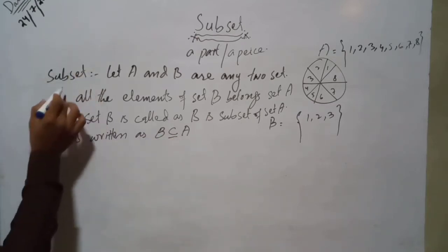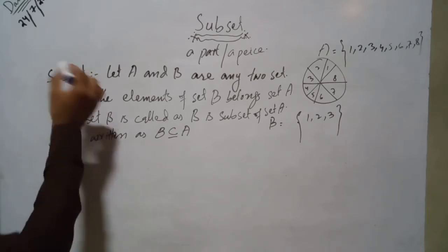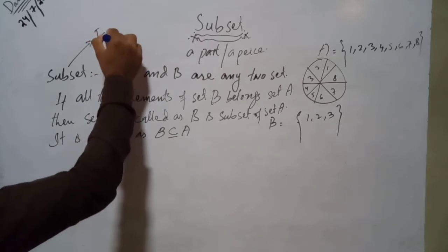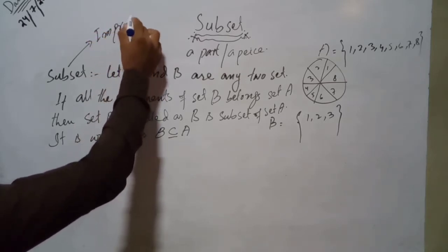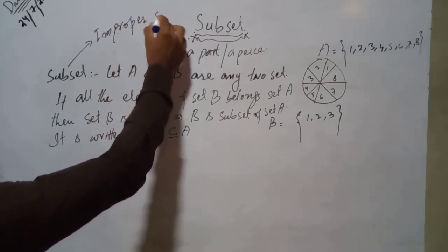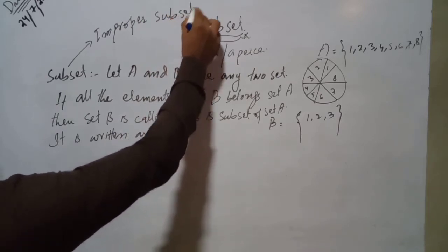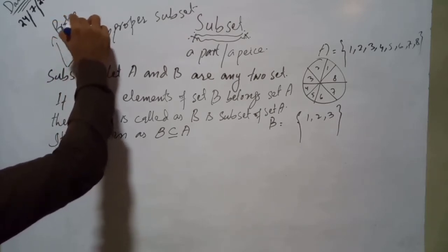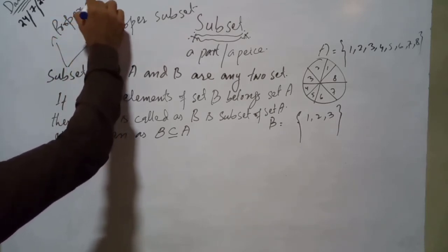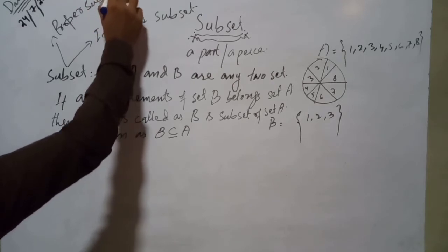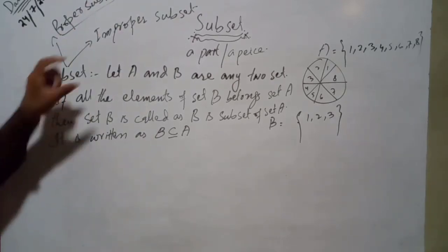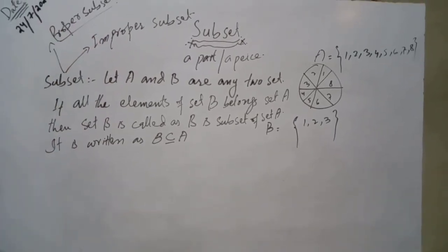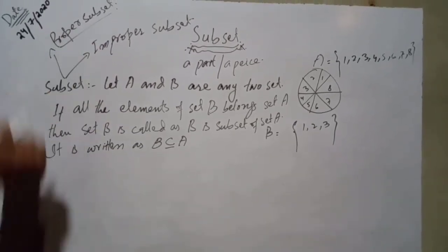The subset is divided into two parts: one is improper subset and the other one is proper subset. So subset is divided into two parts — improper subset and proper subset.